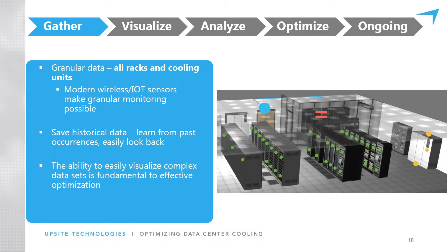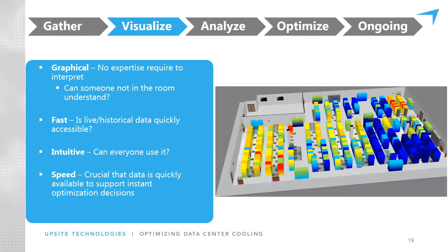Gather that granular data and then visualize it. As you see on the next slide, we need to provide graphical information about what's going on. I've been in a number of computer rooms that have deployed these tools, and what happens is that a screen like you see here on the right is the primary main screen in the NOC — it's the one that you can walk by and at a glance see what's going on.